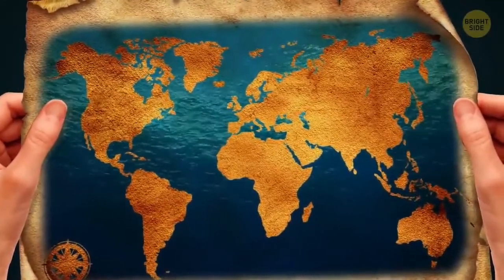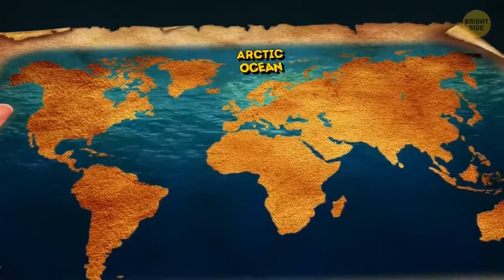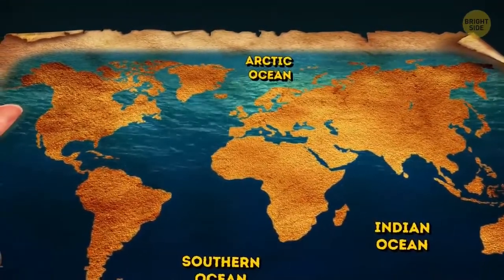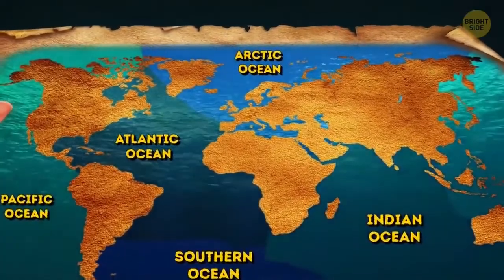If you look at the oceans on the map, you might think that they just flow into each other. It seems like there's only one big ocean, and people just gave different names to its parts. Well, you'll be amazed how vivid the borders between them are.